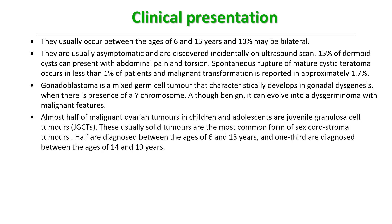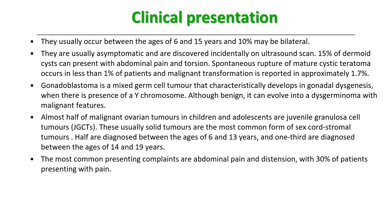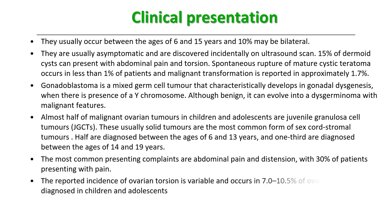Almost half of malignant ovarian tumors in children and adolescents are juvenile granulosa cell tumors. These are usually solid tumors and are the most common form of sex cord stromal tumors. Half of them are diagnosed between ages 6 and 13 years, and one third between 14 and 19 years. The most common presenting complaints are abdominal pain and distension, with 30% of patients presenting with pain. There is a reported incidence of ovarian torsion in around 7 to 10% of ovarian torsion cases diagnosed in children and adolescents.